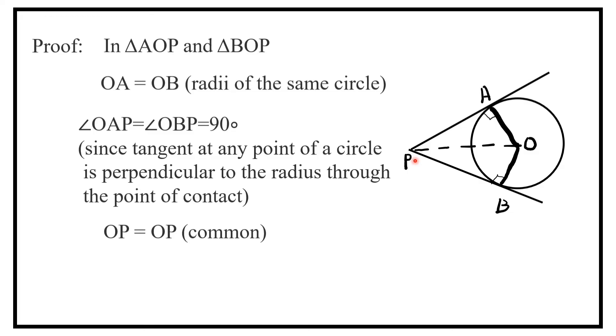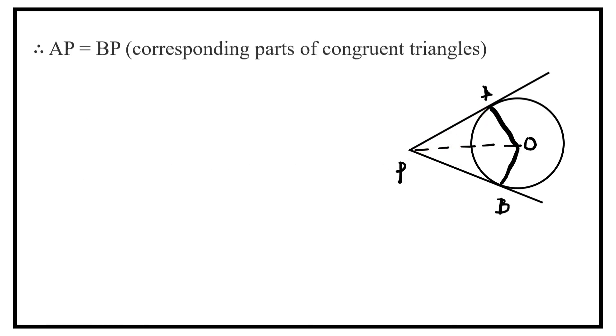OP is equal to OP, you can observe here. That is common. So triangle AOP is congruent to triangle BOP by RHS congruence criterion. R means right angle, H means hypotenuse, S means side.